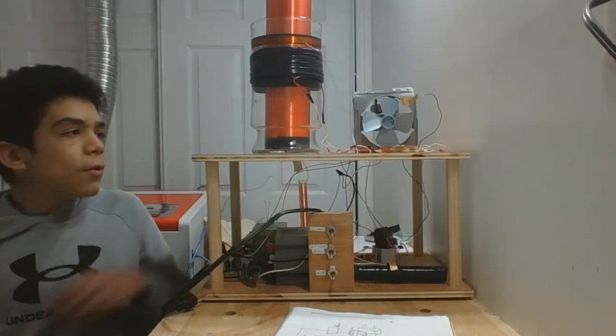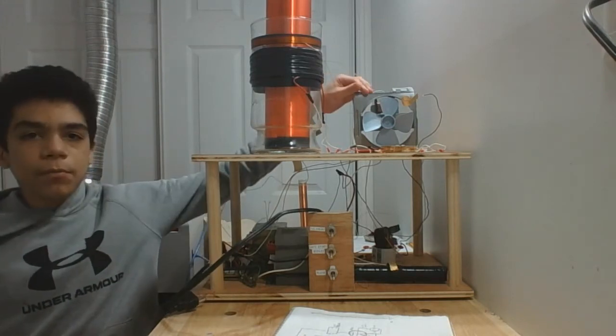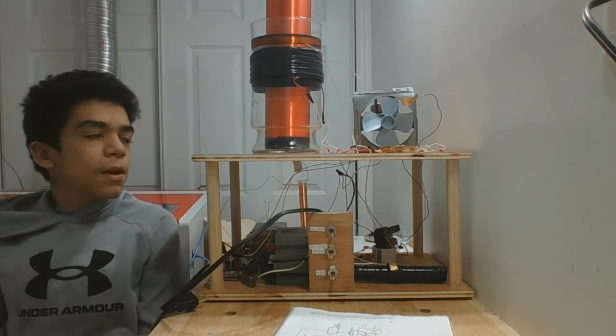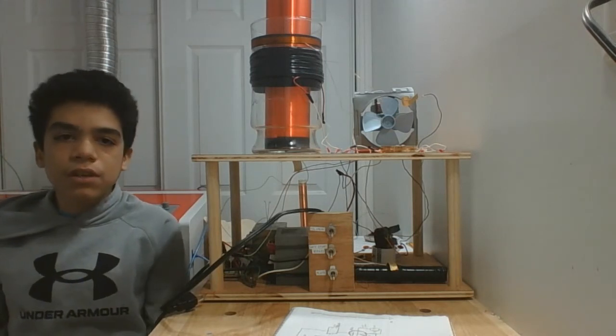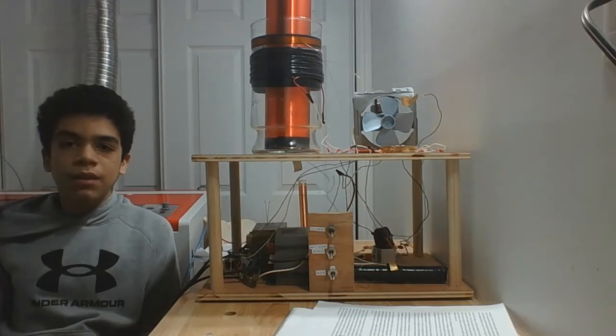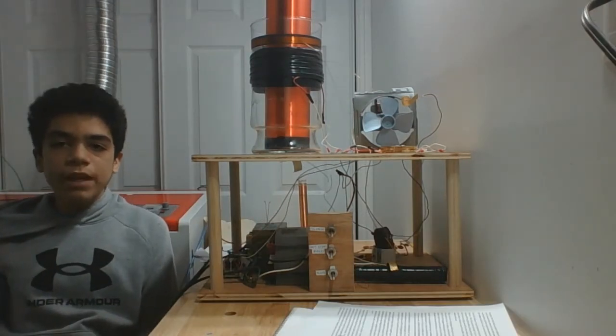Finally I built a wooden base to hold everything together and installed a fan from one of the microwaves to blow cool air at the vacuum tube. I connected the fan before the filament switch so that it turns on as soon as you plug in the filament transformer. Alright now that we all understand how this circuit was built let's go ahead and fire up the Tesla coil.